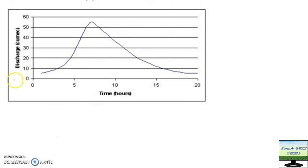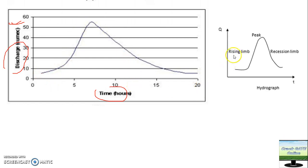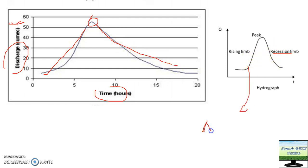If anybody asks you what is a hydrograph, simply tell them a hydrograph is the graphical representation of discharge versus time. Any typical hydrograph will look like this — it has three components: one is the rising limb, then the peak point, and then the recession limb.